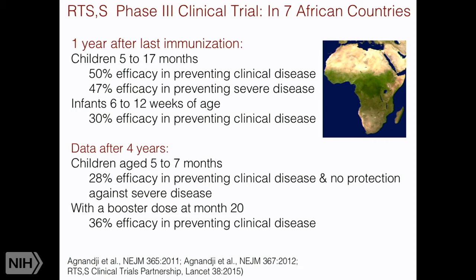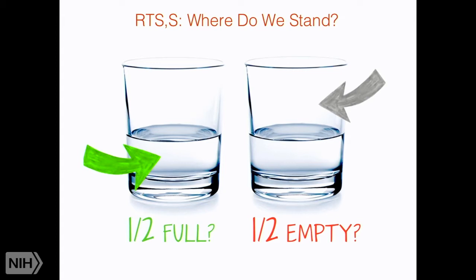You can look at this as the glass half-empty or the glass half-full. The half-empty people say it's a crappy vaccine. The glass half-full people say it's the best we've done — a milestone in malaria. This is the first time a malaria vaccine candidate has shown efficacy in the field. It may not be the malaria vaccine, but it's proof of concept that we can do it. Currently, RTS,S is undergoing phase four clinical trials in three African countries to provide more information on its feasibility, efficacy, and safety.